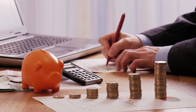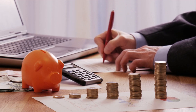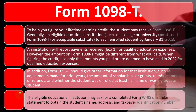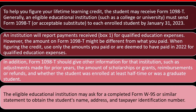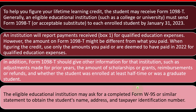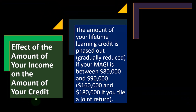The eligible educational institution may ask you to complete Form W-9S to provide your name, address, and taxpayer identification number so they can populate Form 1098-T — similar to how a W-4 works when you're an employee.